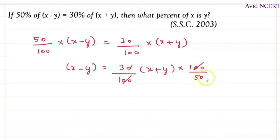So simplifying this, 100 and 100 gets cancelled, 50 and 50 gets cancelled, which is 3 by 5 times x plus y.